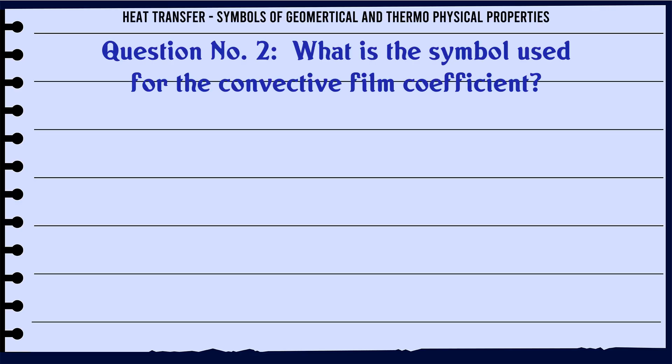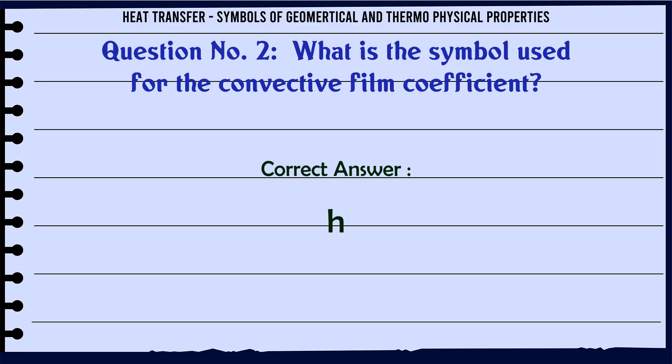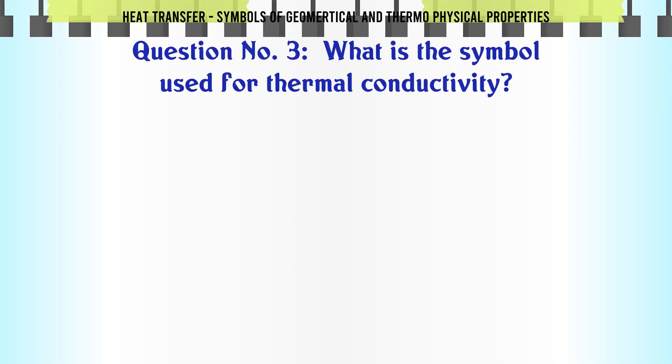What is the symbol used for the convective film coefficient? A: V. B: H. C: (option). D: (option). The correct answer is H.